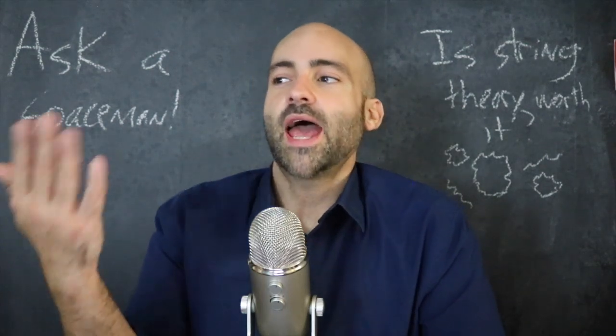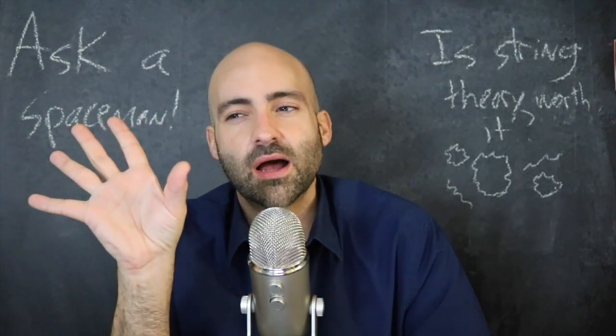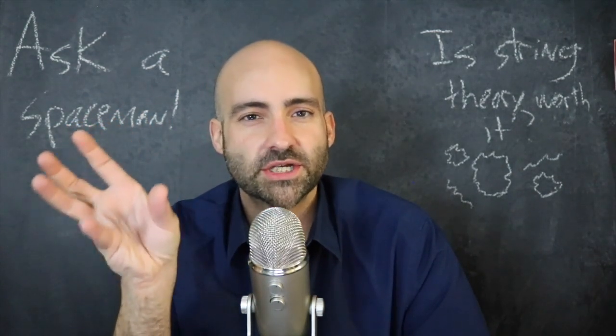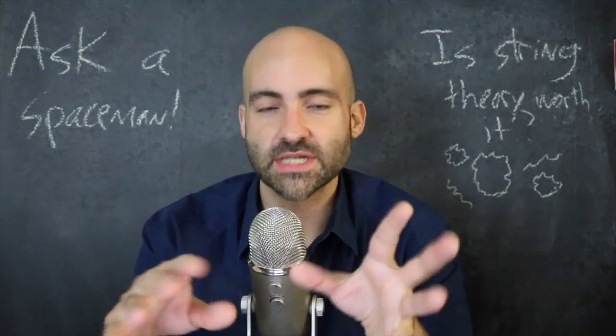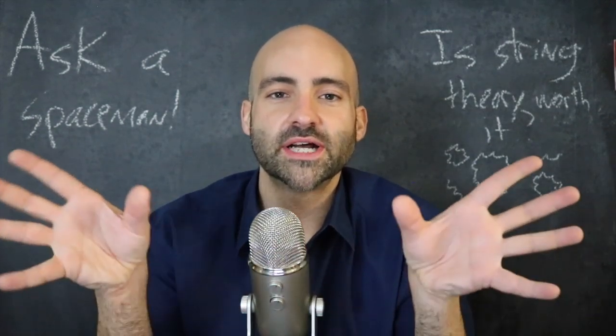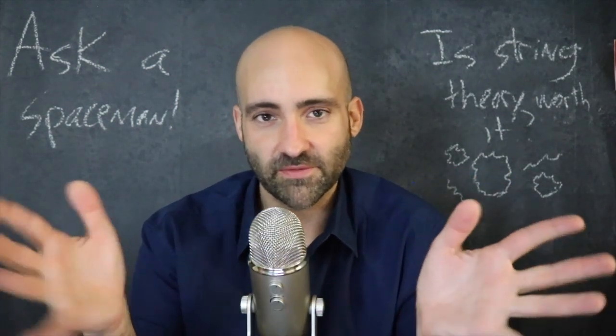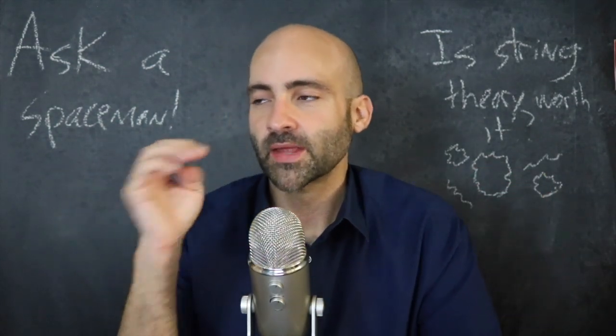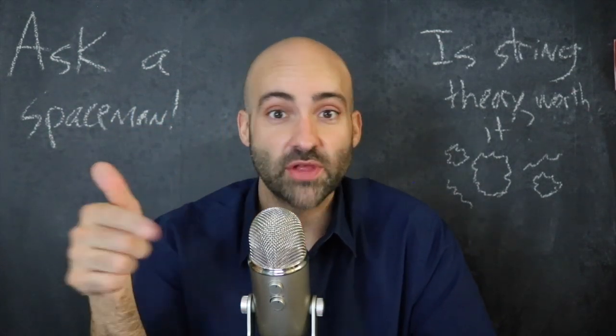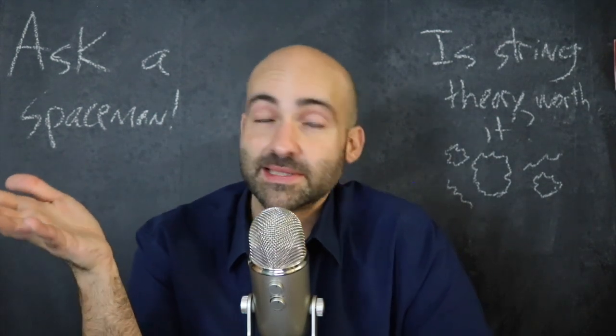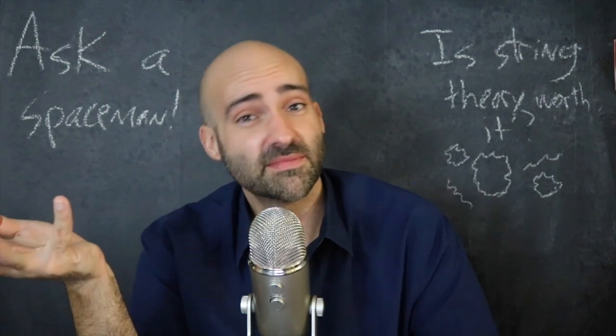After some more mathematical digging, string theorists figured out that you can't just wrap these dimensions up in any old way. They do have to follow certain geometric rules, certain topological rules, and these fall under a general class of ideas called Calabi-Yau manifolds, named after the two mathematicians that figured it out. How many possible Calabi-Yau manifolds could there be for these extra dimensions? Somewhere around 10 to the 200,000. So, you know, a lot.